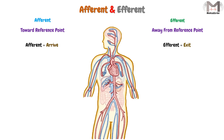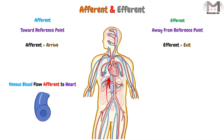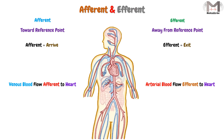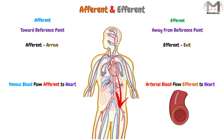For example, we can say the venous blood flow is afferent to the heart — meaning the blood in the veins will flow toward the heart and arrive at it. While the arterial blood flow is efferent to the heart — meaning the blood in the arteries will flow away and exit from the heart.